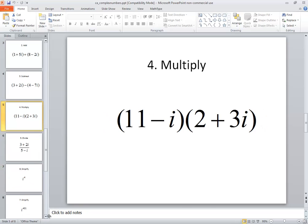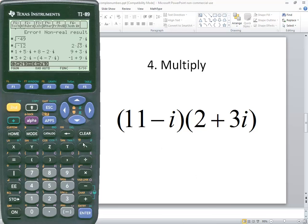Multiplication. Again, we'll just type it in pretty much as we see it. So I'll do a beginning parentheses 11 minus i, so do second catalog for the i, closing parentheses, closing parentheses, 2 plus 3 and second catalog for the i, closing parentheses enter.